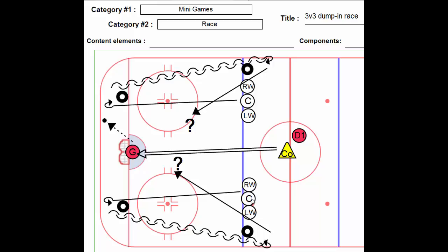On the whistle, all three players that are on their stomachs, hands on the line, get up, skate forwards around the tire, transition or pivot to backwards, transition to forwards. As soon as that first guy is around the tire, the coach shoots it in on net.